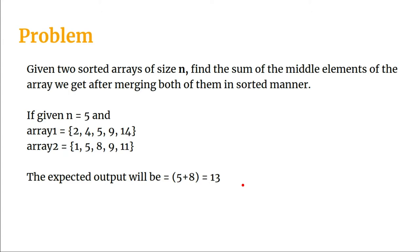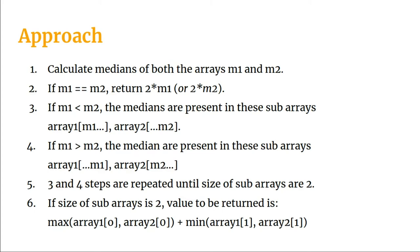Let's look at the approach we are going to take. We first calculate the median of both arrays, m1 and m2. If m1 equals m2, we return 2 × m1 (or equivalently 2 × m2).